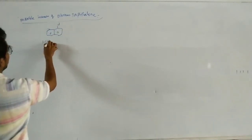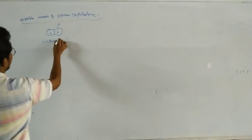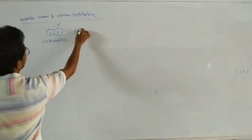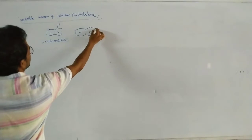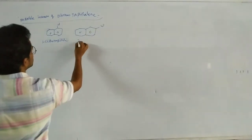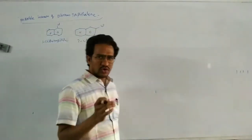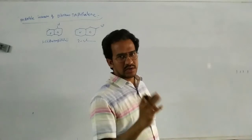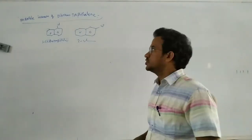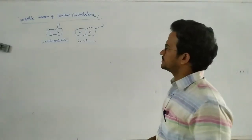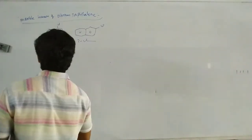Here is 1-chloronaphthalene. And this is 2-chloronaphthalene. That means monochloronaphthalene isomers are 2.